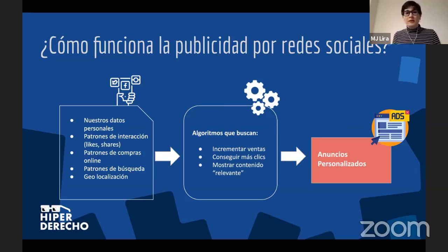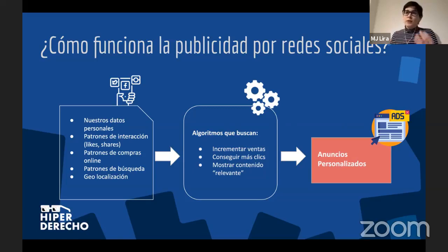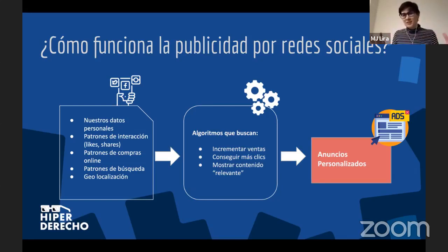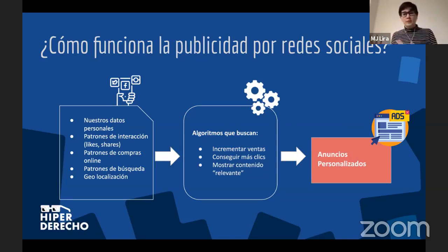Imaginemos una red social como Instagram. Ahí tienen nuestros datos personales que creamos al abrir una cuenta, y se van guardando nuestros patrones de interacciones: con quién nos mensajeamos más, qué fotos nos gustan, las locaciones que compartimos, qué stories nos gustan, cuánto tiempo nos quedamos pegados a una publicación, y cuáles ignoramos. Todo esto es procesado por un algoritmo — la maquinita de cada red social — que genera reglas como: si esta persona es vegana, no le voy a presentar publicidad con productos de origen animal.